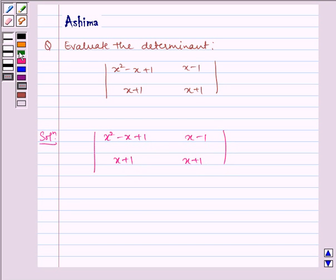Now solving this using the key idea, we get (x² - x + 1) multiplied by (x + 1), which equals x³ + x² - x² - x + x + 1.